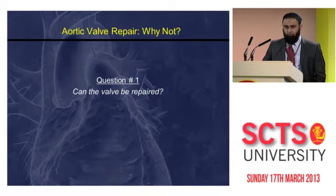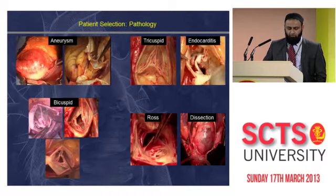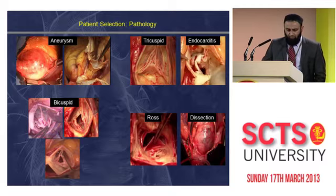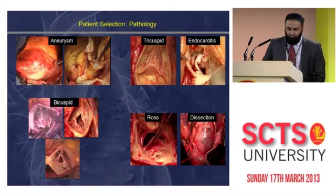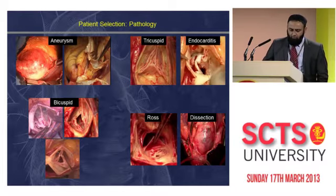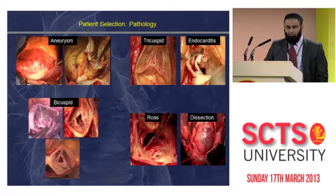The first question we need to ask ourselves is: can we repair the valve? At Brussels and many other centers in the world, we have shown that for various pathologies of aortic insufficiency — including bicuspid and tricuspid, degenerative disease, endocarditis, aneurysmal valve disease, and dissections — the valve can be repaired.